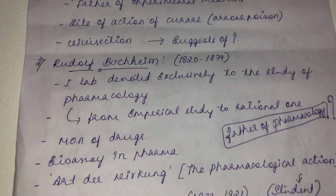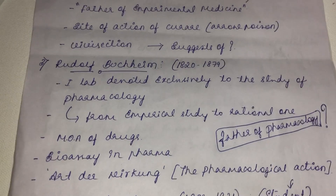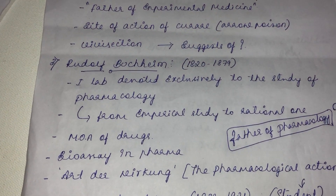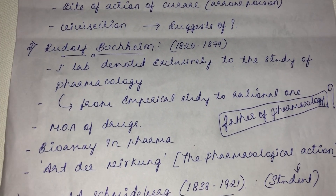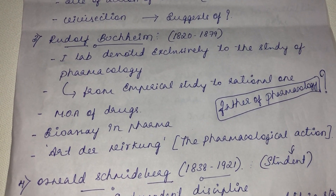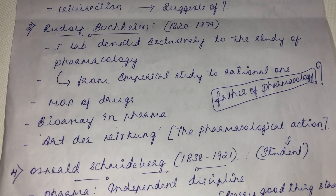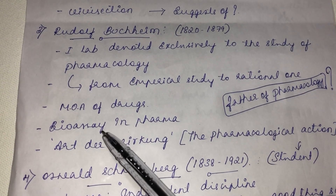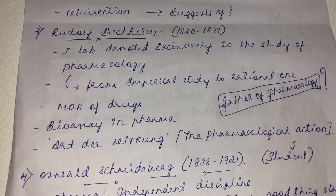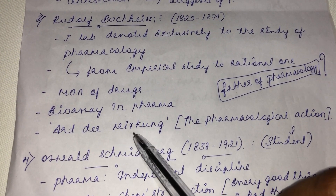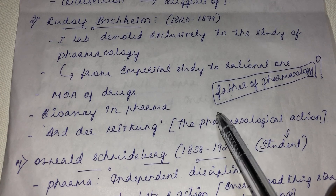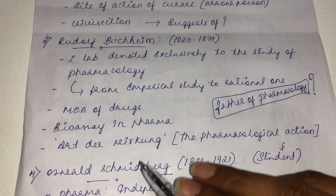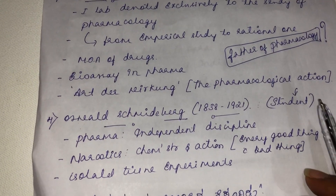Rudolf Buchheim was the person who made the first laboratory devoted exclusively to the study of pharmacology. He was the first to focus on empirical study over rational reasoning, focused on the mechanism of action of drugs, and introduced bioassay in pharmacology. His works were documented in a text called 'Pharmacological Action.' He was rightly called the father of pharmacology since he devoted the first lab exclusively to its study.